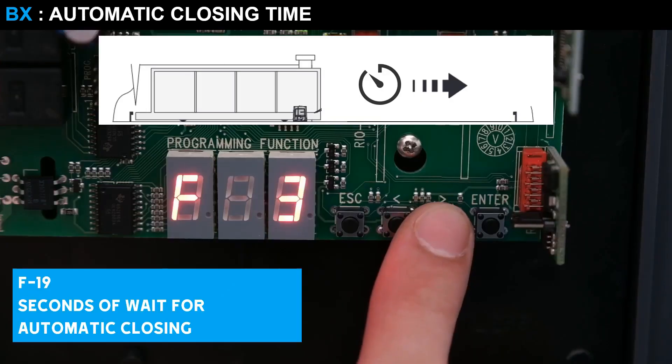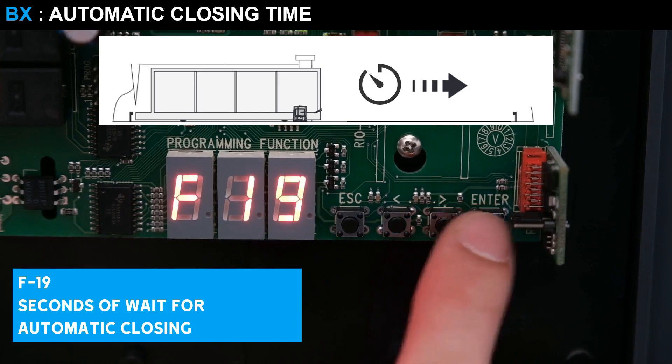To set the automatic closing time, select function F19, and set the number of seconds before automatic closing.